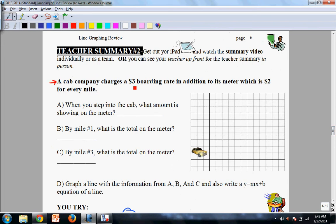It says right here, a cab company charges a $3 boarding rate, underline boarding rate. And in addition, underline in addition, its meter which is $2 for every mile. That is a rate. When you guys see something that looks like a rate, that is equivalent with slope. Just keep that in mind. Something that's a rate is equivalent to slope.